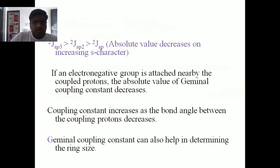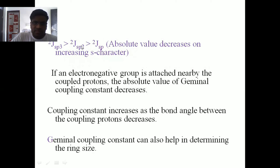Here we compare the geminal coupling constant for sp³, sp², and sp hybridization. We find that the absolute value decreases on increasing the s-character. Going from sp³ to sp hybridization: in sp³ the s-character is 25%, in sp² it is approximately 33%, and in sp it is 50%. So the s-character is continuously increasing.